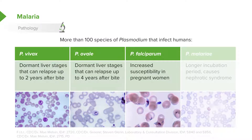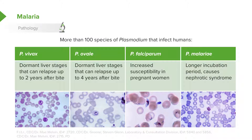P. falciparum is a major cause of death in sub-Saharan Africa, and what's key to remember is that there's increased susceptibility to this one, especially in pregnant women. P. malariae has a longer incubation period and is more likely to cause, for example, nephrotic syndrome. So there are slight differences to these, but mostly they're fairly similar.